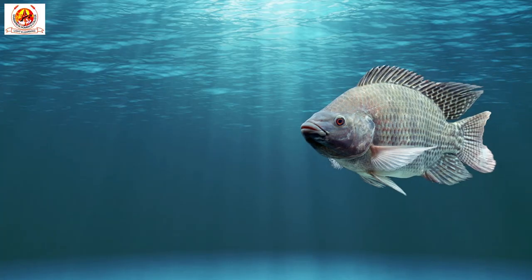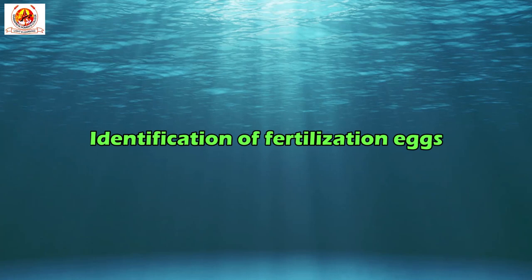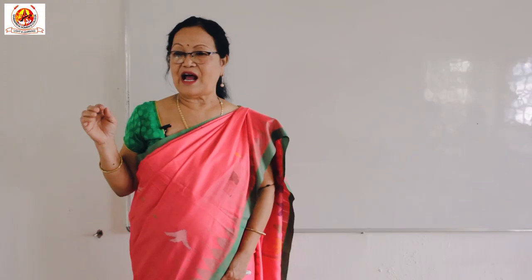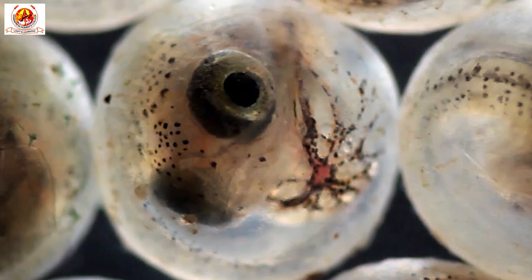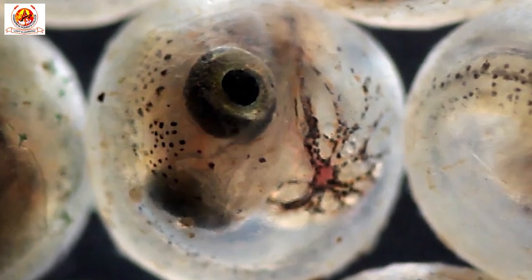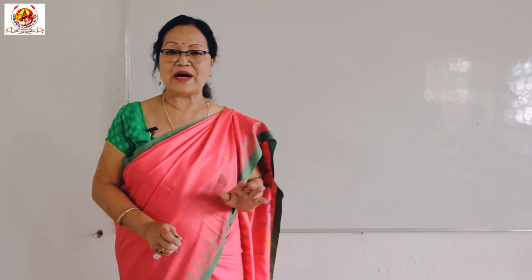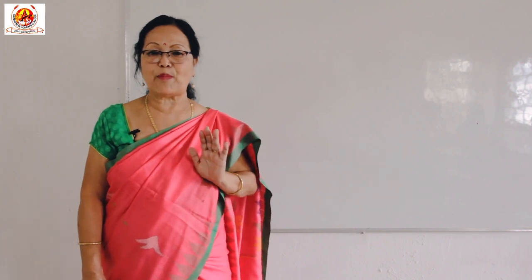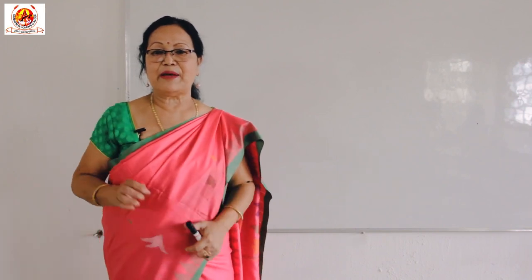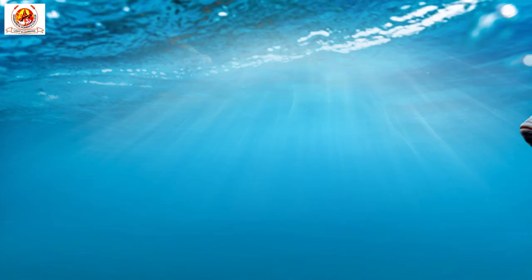Then we have identification of fertilized eggs. The fertilized eggs appear transparent, like pearls. Unfertilized eggs are opaque and whitish. The fecundity rate of Indian carp is about 2 lakh eggs per kg body weight.